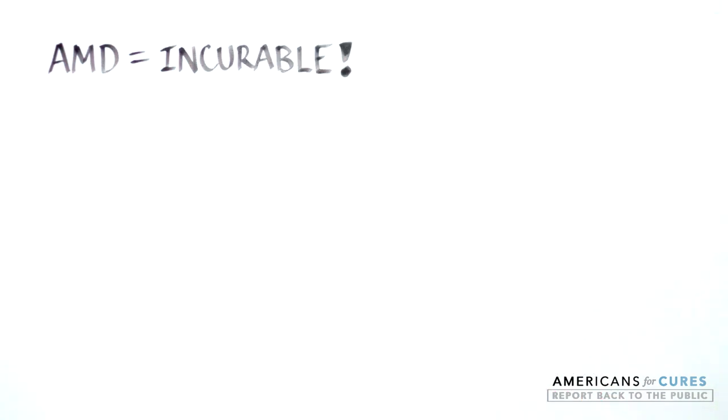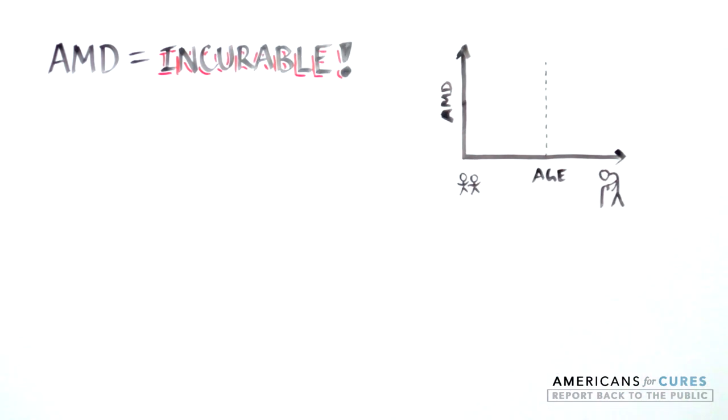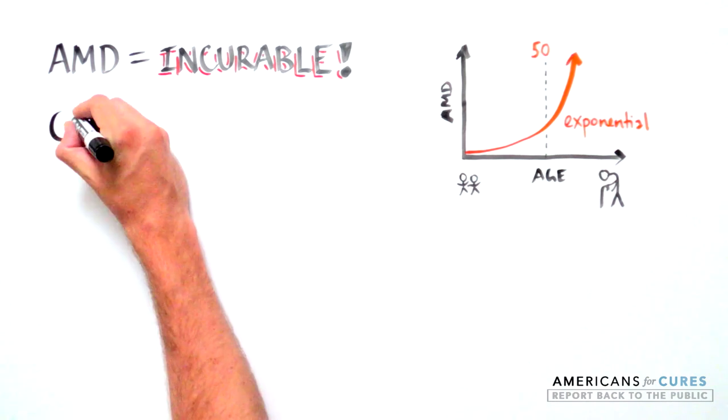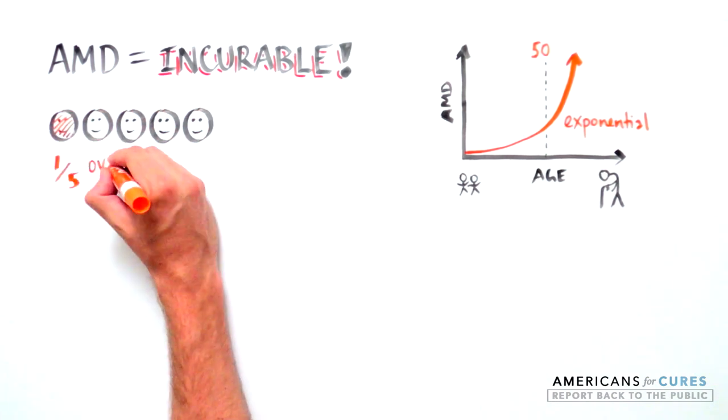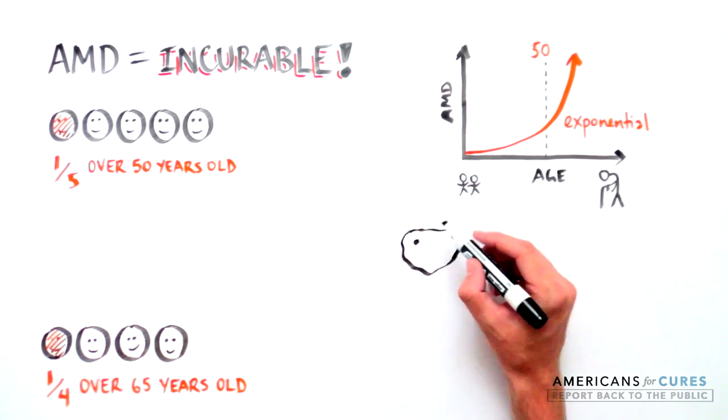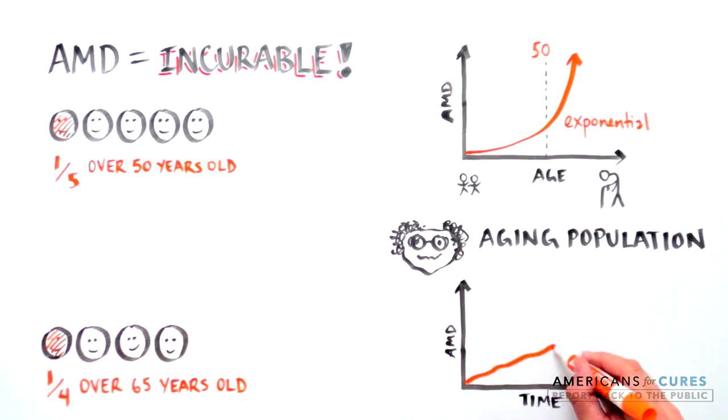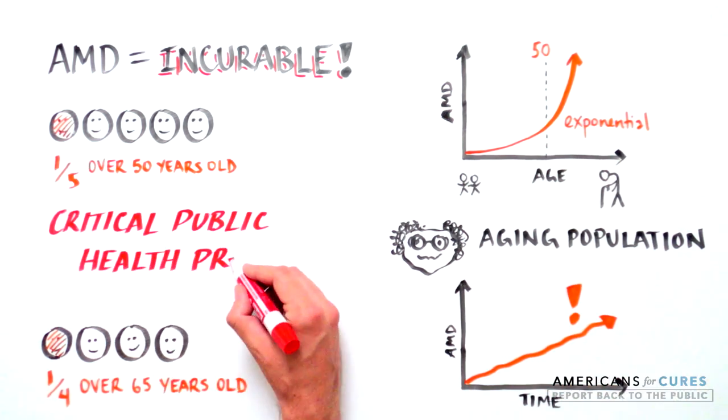AMD is an incurable disease most commonly seen in those over 50. It becomes increasingly common as people age. 1 in 5 Americans over the age of 50 and 1 in 4 Americans over the age of 65 will develop AMD. Within the aging population, the rate of AMD will continue to rise, making it a critical public health problem.